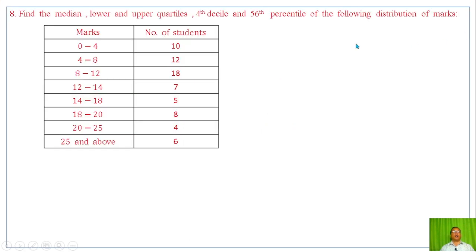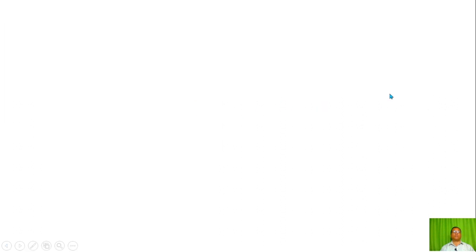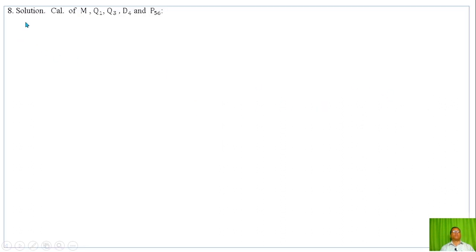Question Number 8: Find the Median, Lower and Upper Quartiles, 4th Decile, and 56th Percentile of the following distribution of marks. Marks are given in the first column and the number of students in the second column. Solution: Calculation of Median, Q1, Q3, D4, and P56.